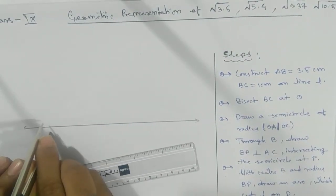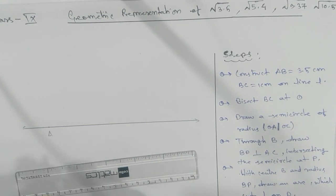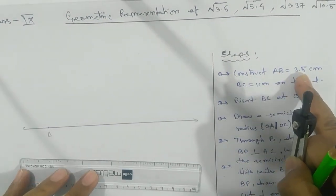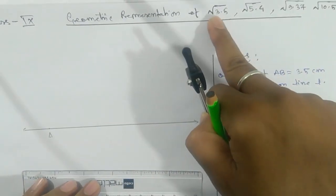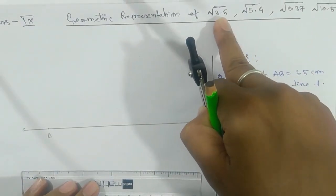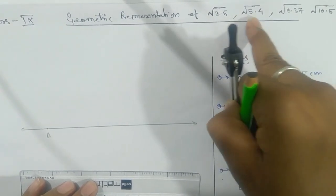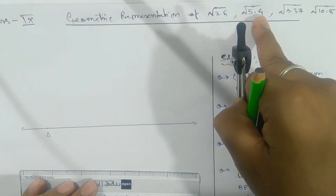a point A on it and take AB = 3.5 centimeters. As they are asking here for √3.5, whatever they demand, we'll take that one. If they're asking for √5.4, we'll take 5.4 centimeters.